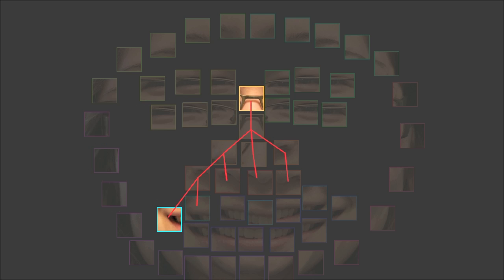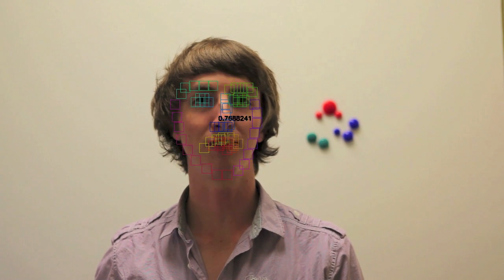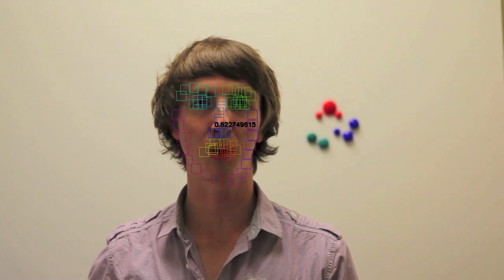When the geometric relationships are posed as a tree structure between parts, the best part configuration can be solved for efficiently using dynamic programming.